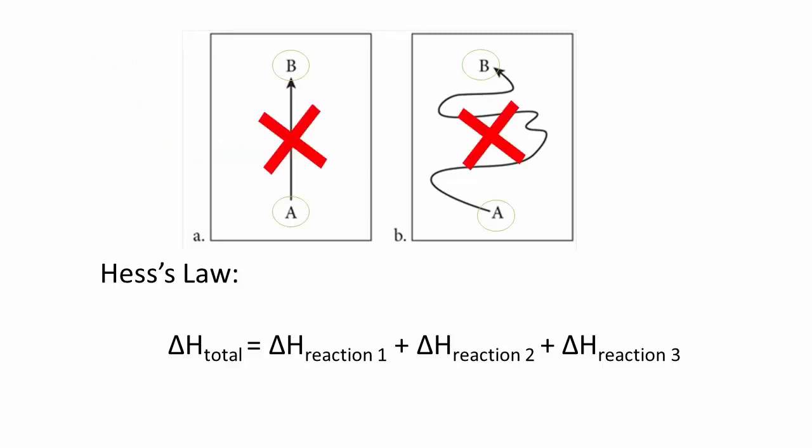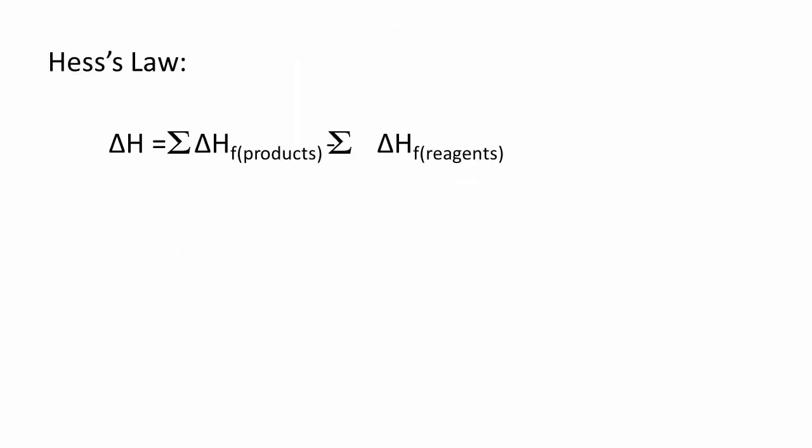Finally, once we know the enthalpies of formation for each reactant and product in a reaction, the enthalpy of any reaction is but the difference between the enthalpies of formation of the products minus those of the reactants. The enthalpy of the reaction will provide us with the heat released if the reaction is carried out under constant pressure.